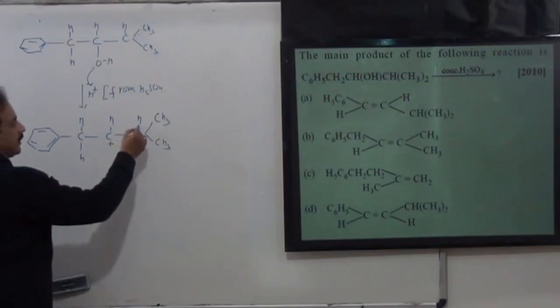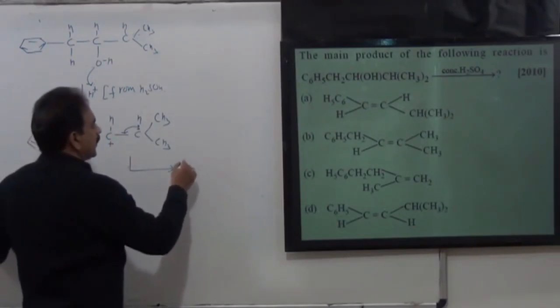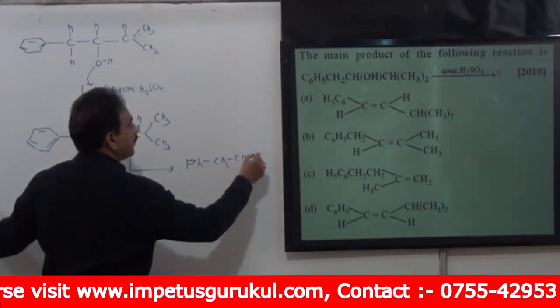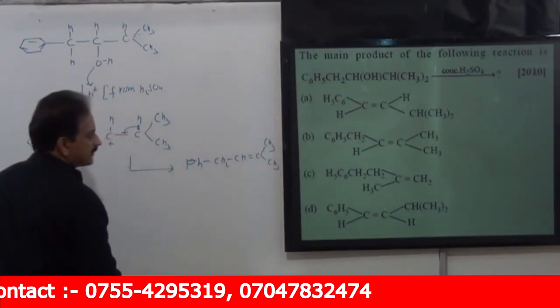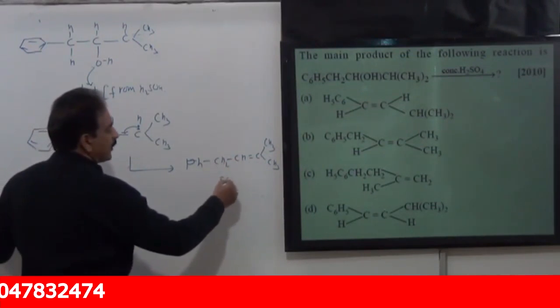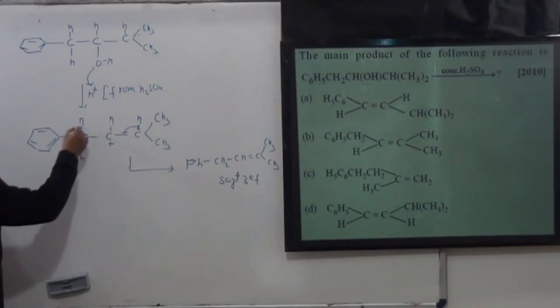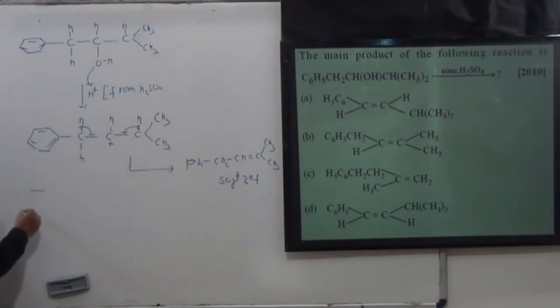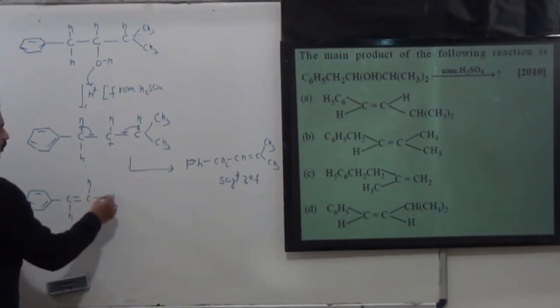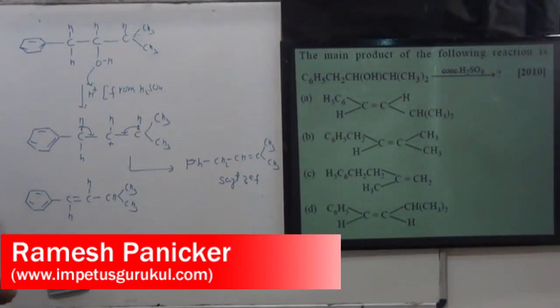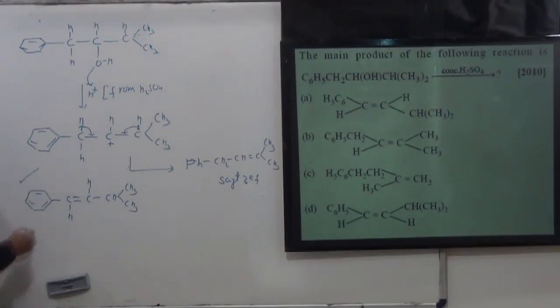Now the point is that if H positive here, we will get C6H5-CH2 and then we have to remove H2O. Now if we have the H2O removal, we form the double bond.